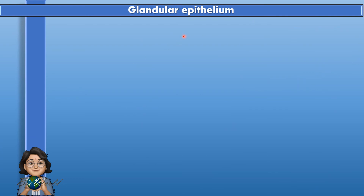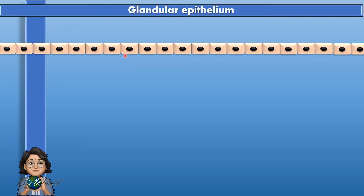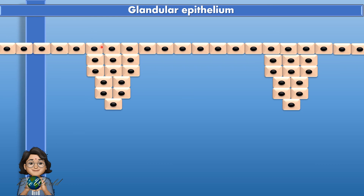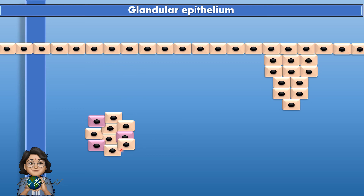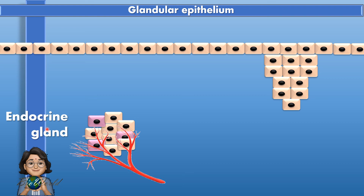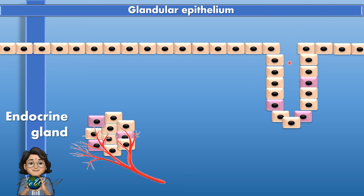Now we'll talk about the final type of epithelial tissue known as the glandular epithelium. The glandular epithelium forms when the epithelial tissue does mitosis but the new cells, instead of developing upwards, begin to develop downwards. One of two events may occur. The first event is that these group of cells will break free from the main epithelial layer and become trapped in the blood capillaries located below the basement membrane — when this occurs, an endocrine gland is formed. The second event is that the group of cells may rearrange themselves so that a channel or duct develops — this structure is an exocrine gland.